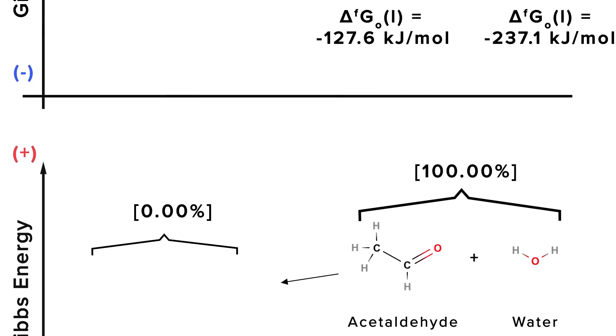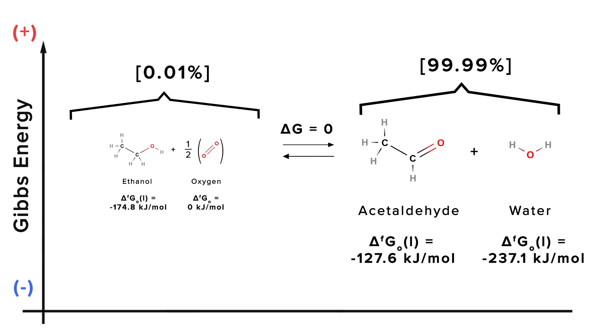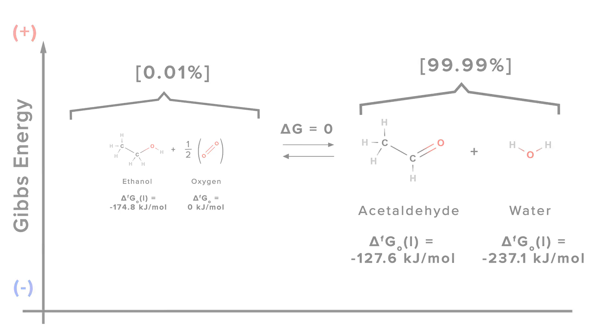In fact, if we started only with acetaldehyde and no ethanol, then a little bit of ethanol would be produced before delta G is zero and equilibrium is reached again. Equilibrium is everywhere, and it is one of the keys to understanding chemistry.